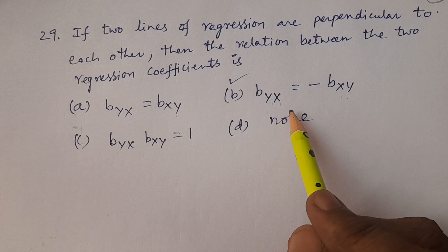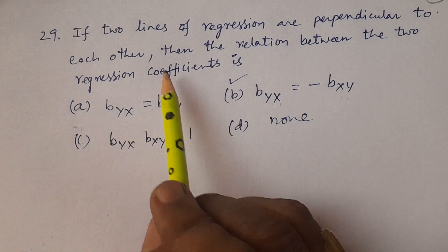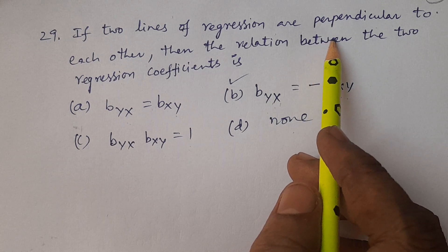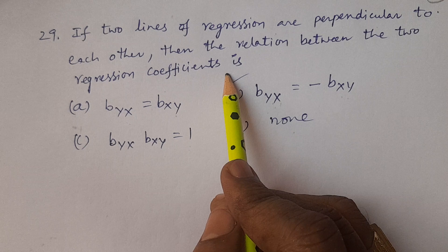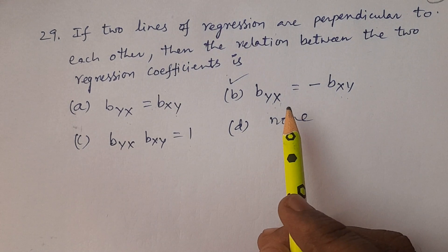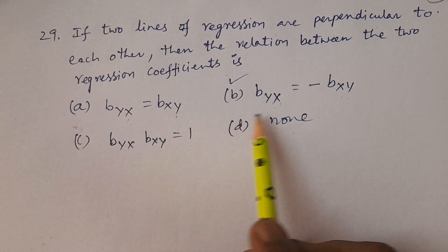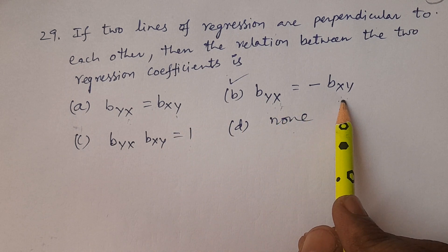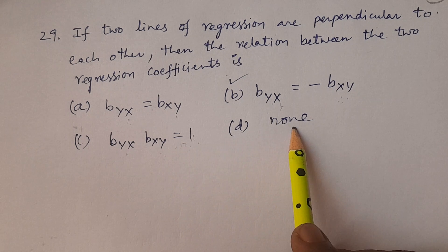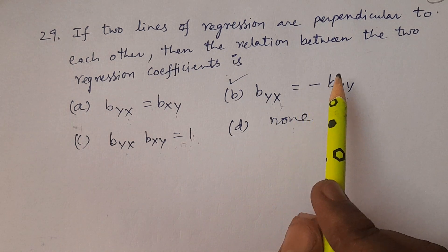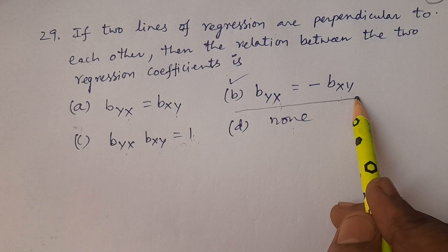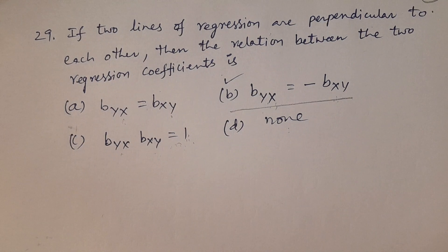In Telugu: if two lines of regression are perpendicular to each other — two regression lines are perpendicular to each other — then the relation between the two regression coefficients. byx into bxy equals 1 is already discussed for coincide. The answer here is: byx equals minus bxy. Hope you understand these questions.